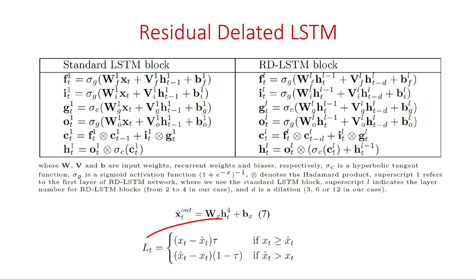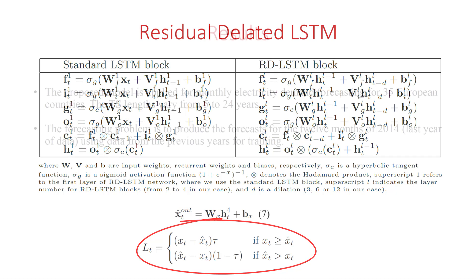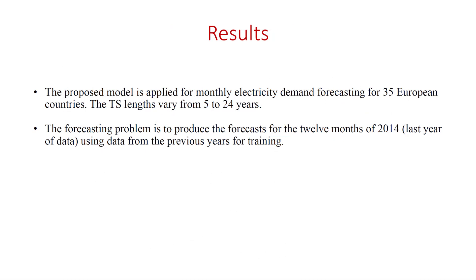During learning, the pinball loss is minimized. The tau parameter controls the bias of the forecasts. We applied the proposed model for monthly electricity demand forecasting for 35 European countries. The forecasting problem is to produce the forecasts for the 12 months of the last year of the data using data from the previous years for training.